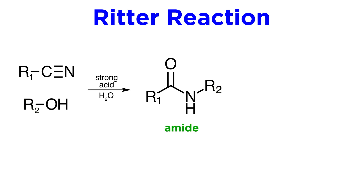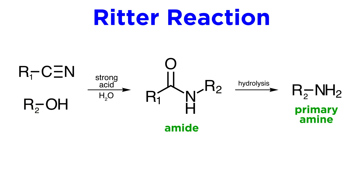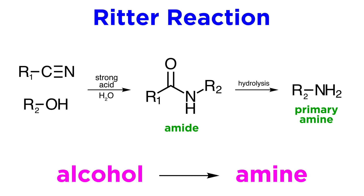The products of this reaction are amides, which can be hydrolyzed to yield primary amines. This therefore indirectly constitutes a method to transform an alcohol into an amine. The reaction works best for tertiary alcohols, but can be applied to secondary and primary alcohols as well.